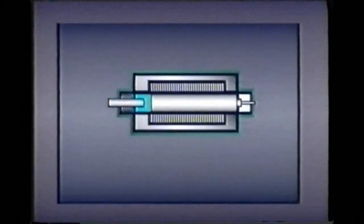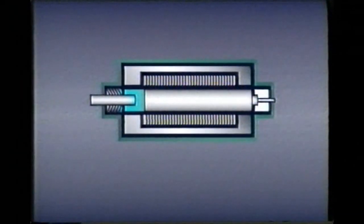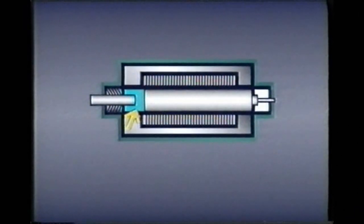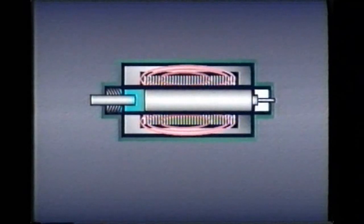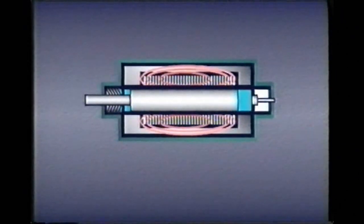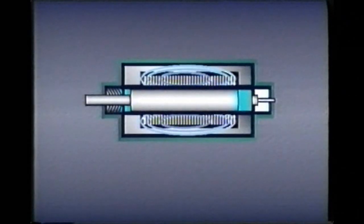Wet armature solenoids work similarly. However, the solenoid tube is screwed into the valve body and fluid from the system surrounds the plunger. When voltage is applied, high inrush current creates a strong magnetic field that pushes the plunger against the push pin. As with an air gap solenoid, current drops from the higher inrush level to the lower holding level as the plunger seats and shifts the spool.